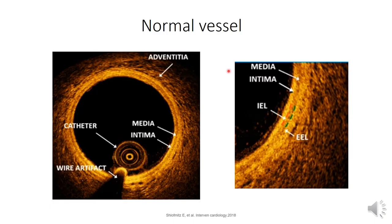Starting with how a normal vessel appears: as we know from pathology, the coronary artery is composed of three layers. The inner layer is the intima — the bright layer — followed by the middle layer, the media, which is less bright, and then the adventitia, which appears heterogeneous and bright all around the vessel. When we zoom in, the media is the least bright layer between the intima and adventitia. It is surrounded by the internal elastic lamina and external elastic lamina. The external elastic lamina is an important region from which we take our measurements.